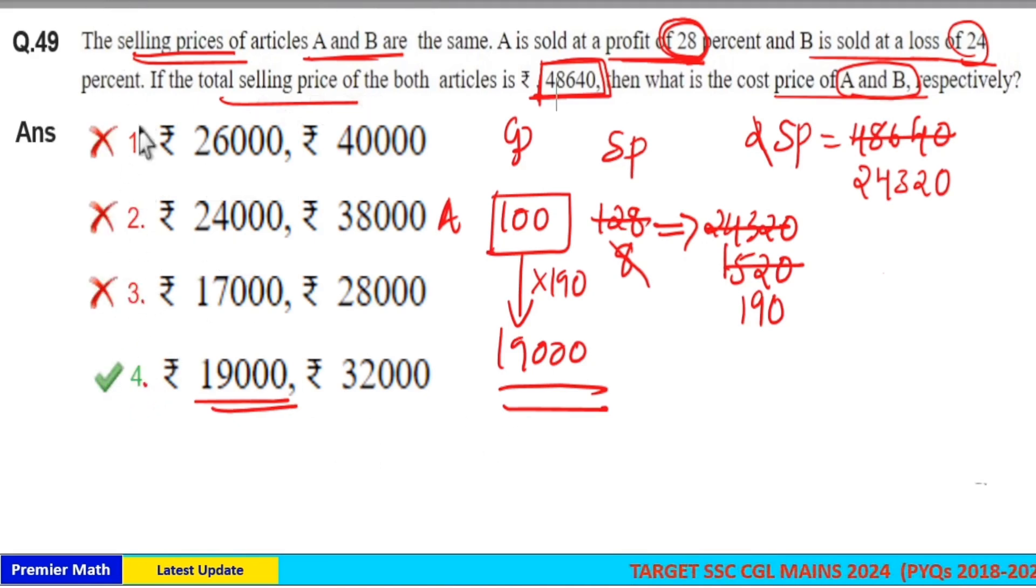Now if you want to find cost price of B using this method, consider cost price of B as 100 rupees. Then here he sold it at a loss of 24%, so 100 minus 24, 76 rupees is the selling price, and the 76 rupees is given as 24,320.